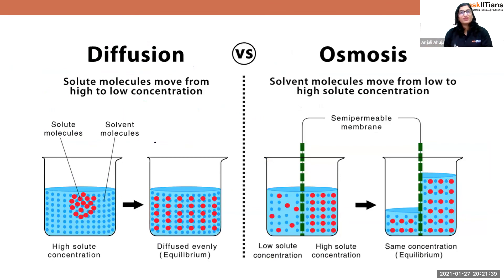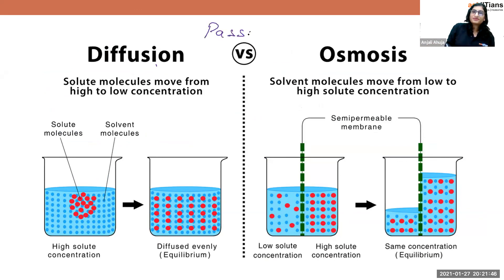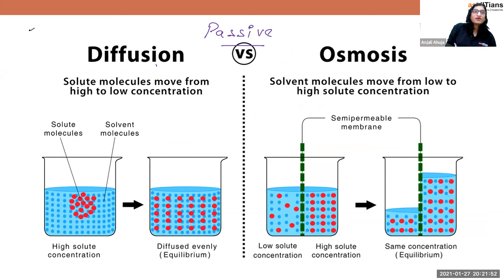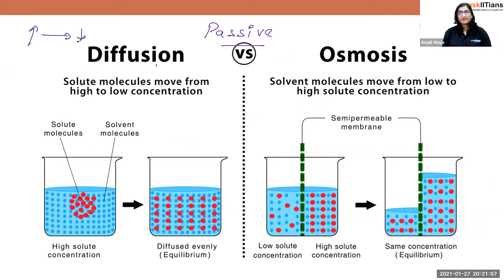Diffusion and osmosis are both types of passive transport. No ATP is needed in either case, and molecules move from high to low concentration in both. The one difference is that osmosis involves a semi-permeable membrane, whereas in diffusion, the membrane does not play that selective role.